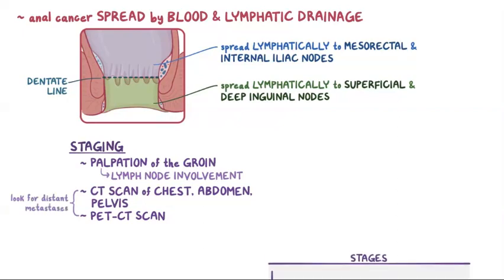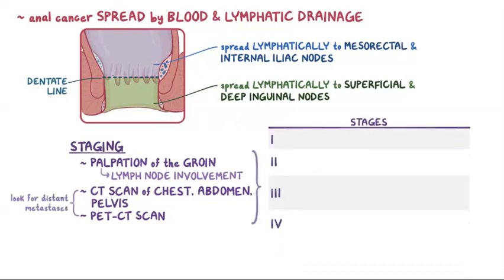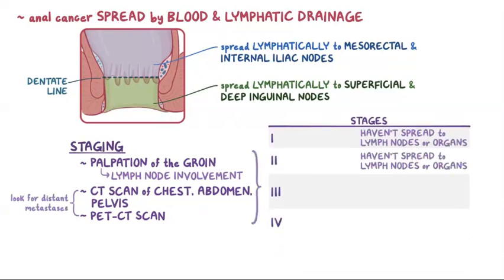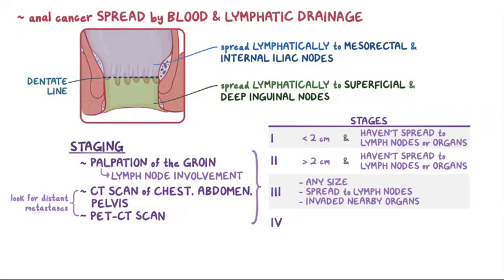Stage 1 and 2 tumors are ones that haven't spread to lymph nodes or organs, with stage 1 being smaller than 2 cm and stage 2 being larger than 2 cm. Stage 3 is a tumor of any size that has spread to lymph nodes or invaded nearby organs. Finally, stage 4 is a tumor of any size with distant metastases, usually to the liver and lungs.